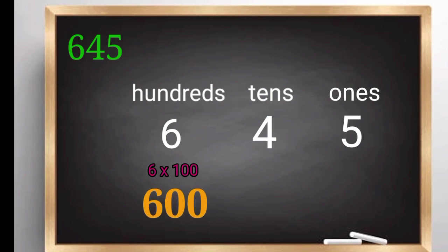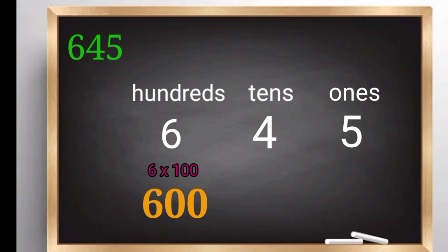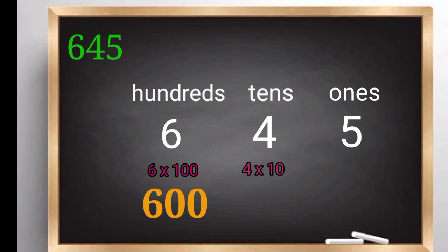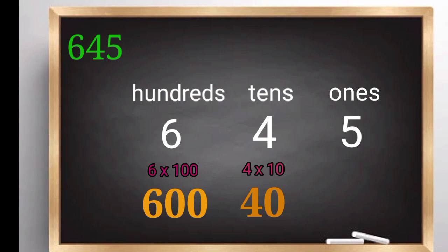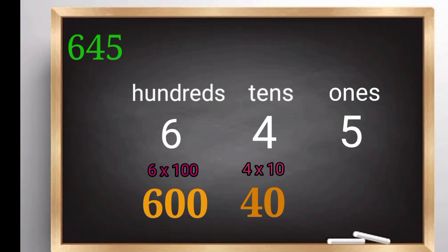The number 4 in the second column means that there are four tens, and so the place value is four times ten. The number 5 in the ones column means that there are five ones, and the place value is five times one.